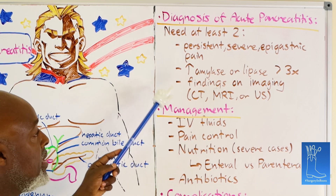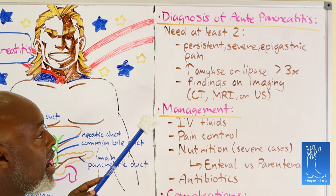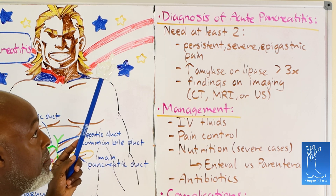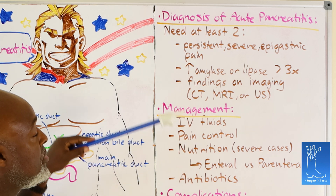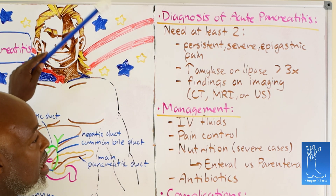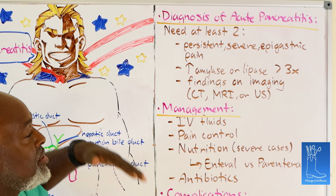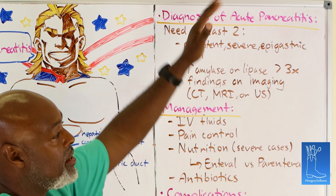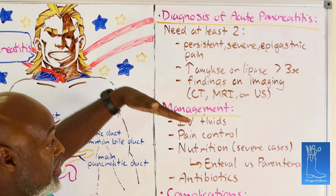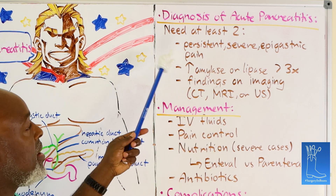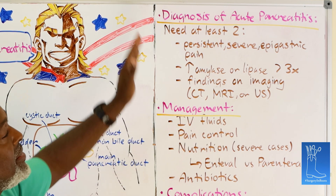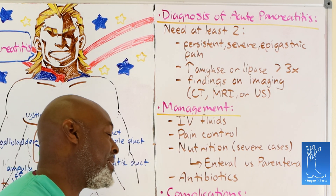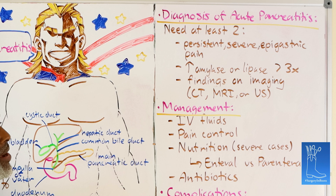Amylase and lipase patterns differ by cause. In biliary disease they spike higher and then trickle down quickly, whereas in alcoholic pancreatitis they have a lower, longer curve. In biliary pancreatitis in the hospital the pattern can fluctuate because patients eat, levels go back up, then they're made NPO and levels go back down. But it's not quite that simple.